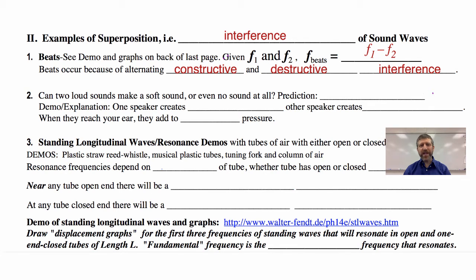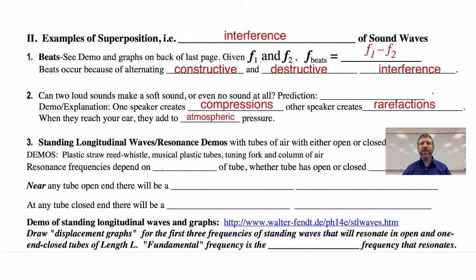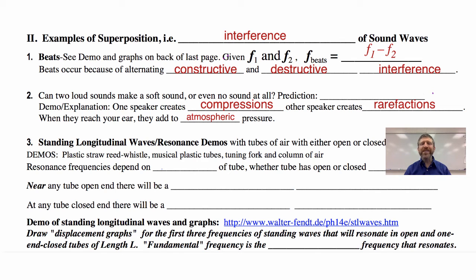That is the reverse of what it's supposed to be, so one speaker is out of phase with the other. One is pushing, creating a compression, while the other is pulling, creating a rarefaction. The explanation is: one speaker creates compressions at the same time the other creates rarefactions. When they reach your ear, those two longitudinal waves cancel, creating no sound at your ear.